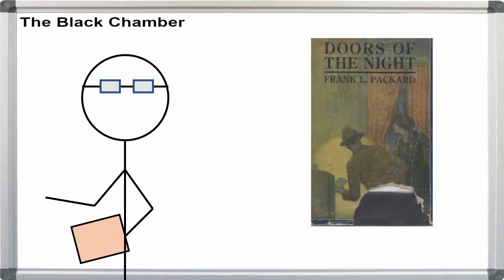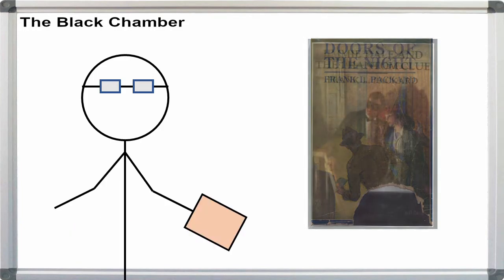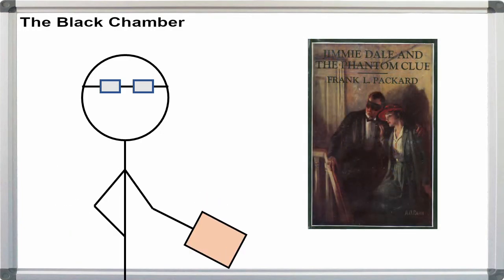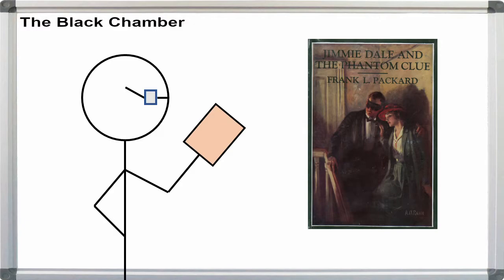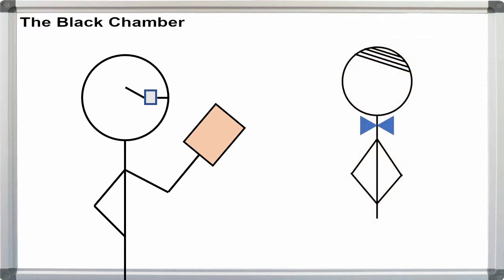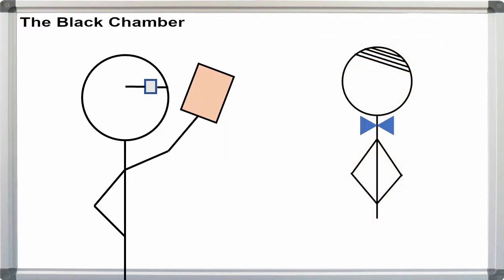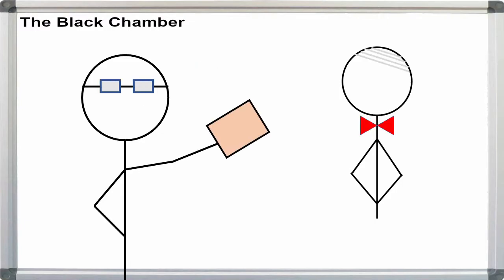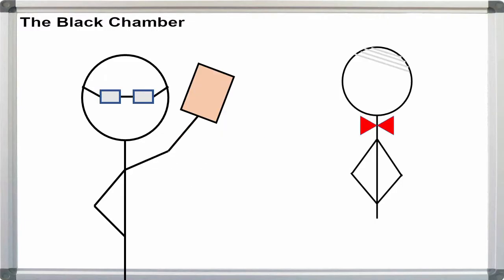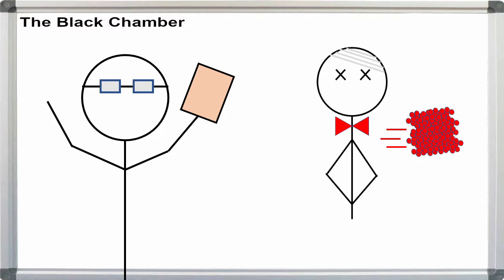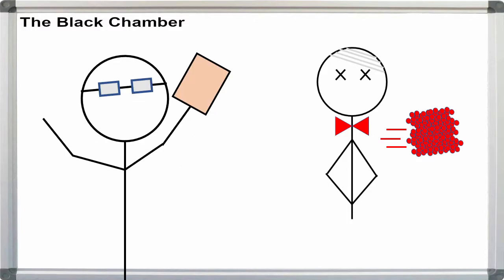Doors of the Night, published in 1922, uses almost the exact same plot as his Jimmy Dale and the Phantom Clue, also from 1922. In Doors of the Night, Billy Kane, personal assistant to a rich philanthropist, is framed for his employer's death and the theft of a fortune in rubies.